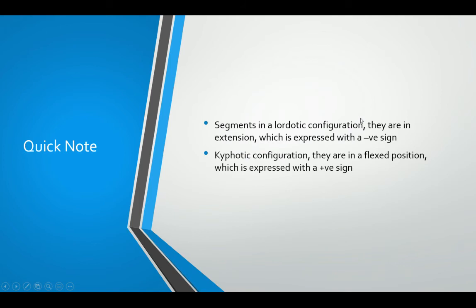A quick note on how to express the mathematics of the posterior tangent method. When looking at a spine or segments in a lordotic configuration, we use a negative sign in front of the value to express that they are in extension or going in a lordotic configuration. When you end up with a kyphotic or flexed position, you simply use a positive value — indicating whether it's going in the right direction, in a lordotic configuration, or in a flexed kyphotic position.